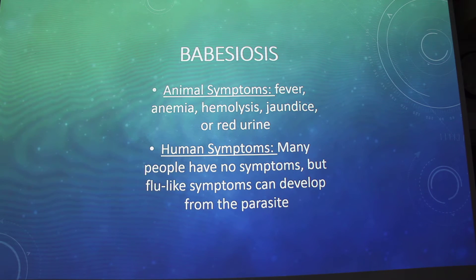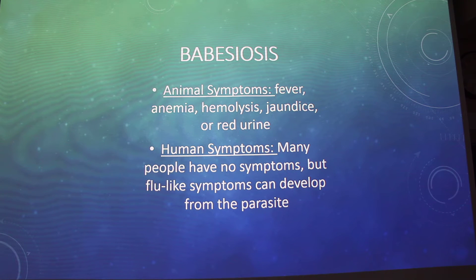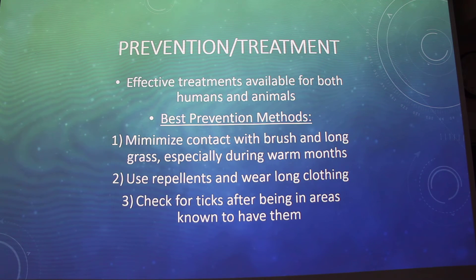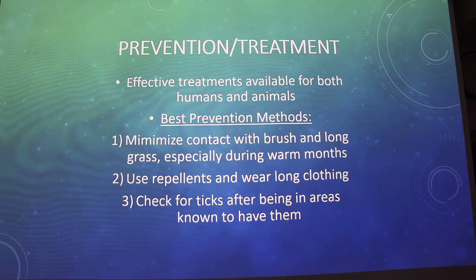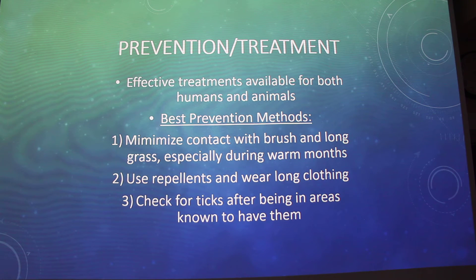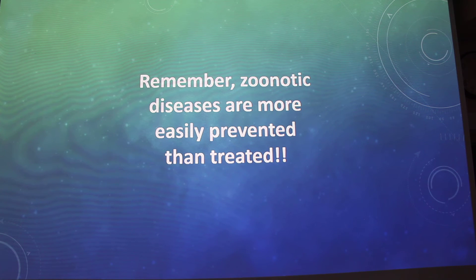Animal symptoms include fever, anemia, hemolysis, jaundice, or red urine. For humans, a lot of people don't have symptoms, but they can develop flu-like symptoms. There are effective treatments available for both humans and animals, so it's not a big deal if you get bit and develop something. Best prevention: minimize contact with brush and long grass especially during warm months, use repellents and wear long clothing, and check for ticks after being in known tick areas. The takeaway: zoonotic diseases are more easily prevented than they are treated.